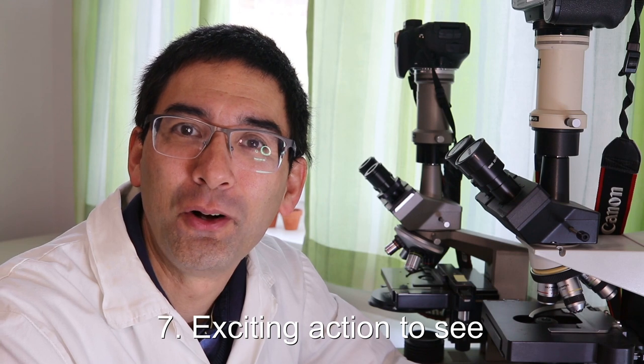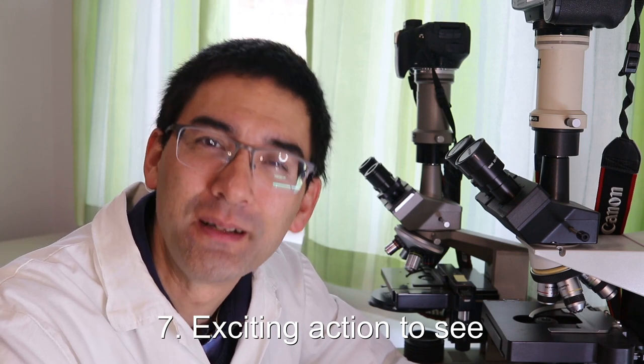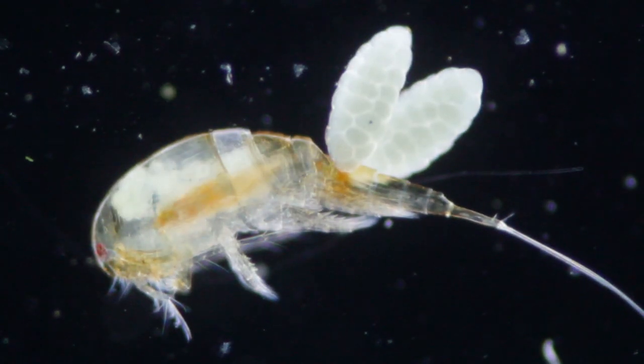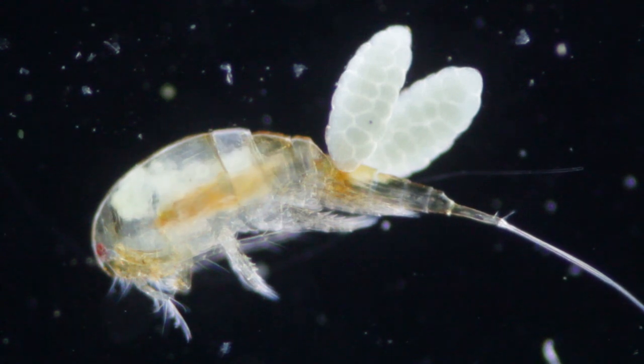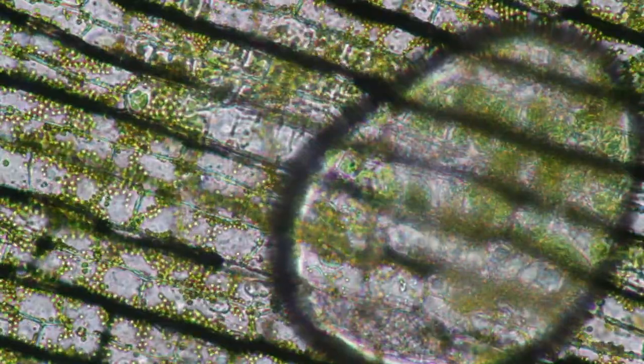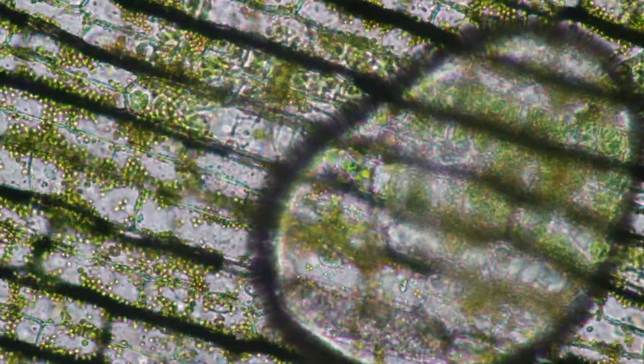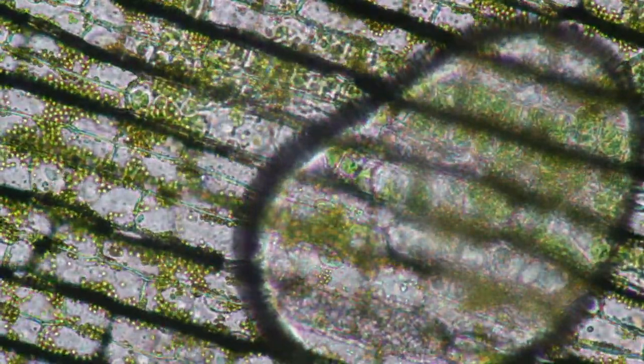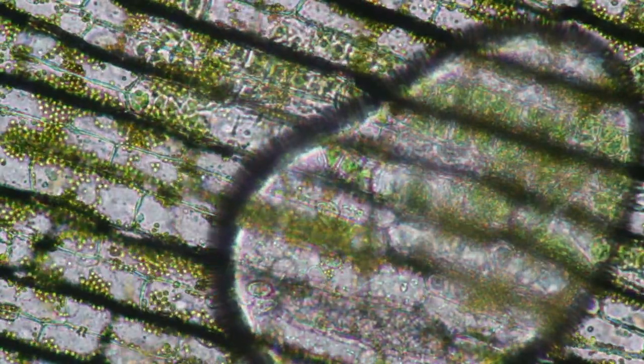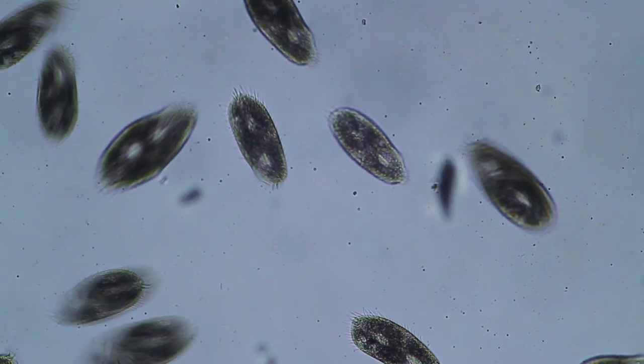There's a lot of action in microscopy. For example, if you watch a water sample from a pond, you can see a lot of organisms moving around. It's especially fascinating for children. You can actually see cells divide, see the chloroplasts inside water plants moving around, see paramecia and ciliates moving around on the slide looking for food.